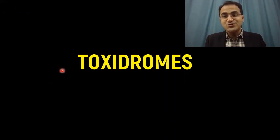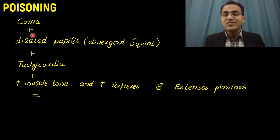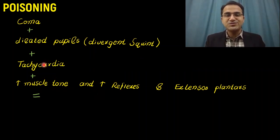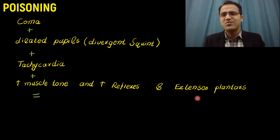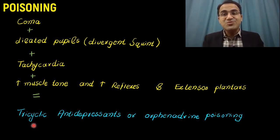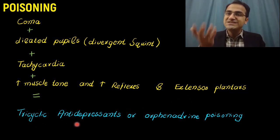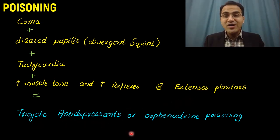Coming to toxidromes — classical signs and symptoms seen with certain medications. If you see coma with dilated pupils, tachycardia, increased sympathetic activation, increased muscle tone, hyperreflexia, and extensor plantars — an upgoing Babinski sign — this means the patient has most likely ingested tricyclic antidepressant, which has anticholinergic effect and increases sympathetic activity.